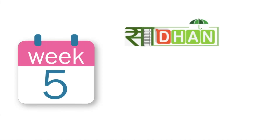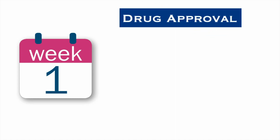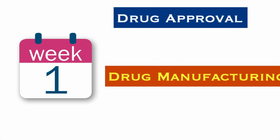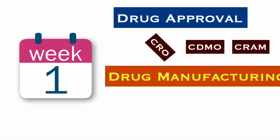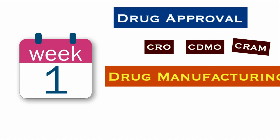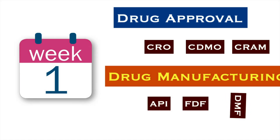Welcome to our 5-week course on pharmaceutical sector analysis. Let's recap. We discussed about the drug approval process in Week 1. Then we learnt about the drug manufacturing process. In drug approval, we demystified certain terms such as CRO, CDMO, and CRAM. In drug manufacturing, we also talked about what APIs are and what formulation is, and then we talked about DMF. We now know a lot about the key building blocks of the pharmaceutical industry.